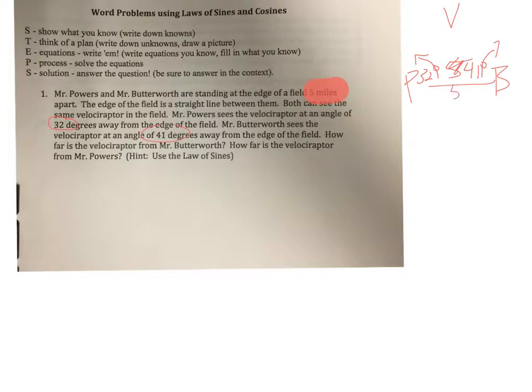That five I have to rewrite. And how far is the velociraptor from Mr. Butterworth? How far is the velociraptor from Mr. Powers? And maybe most importantly, how quickly should they be running to escape from the velociraptor? That's the show part. Writing down stuff that we know from the problem.